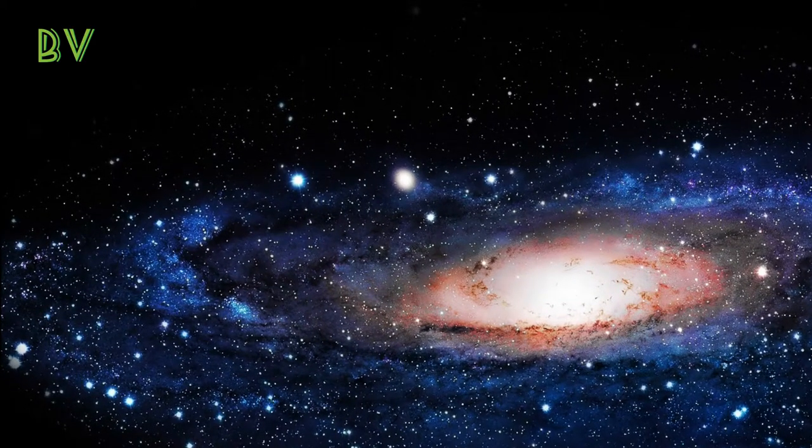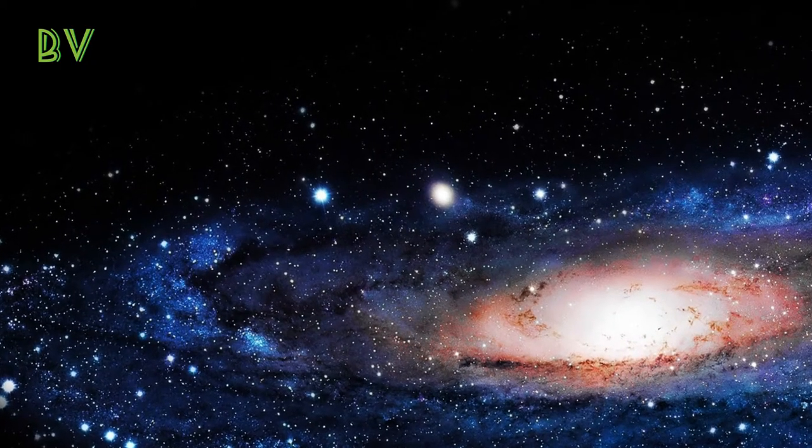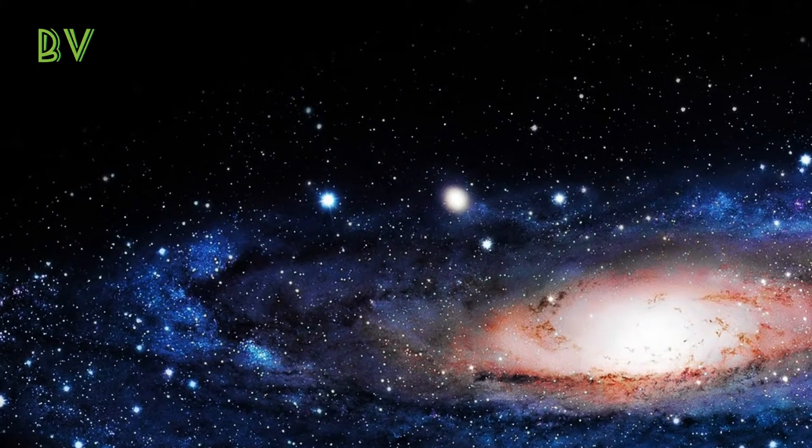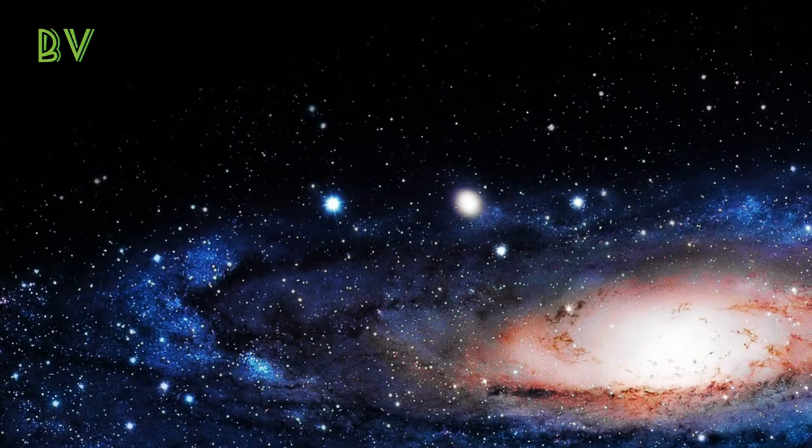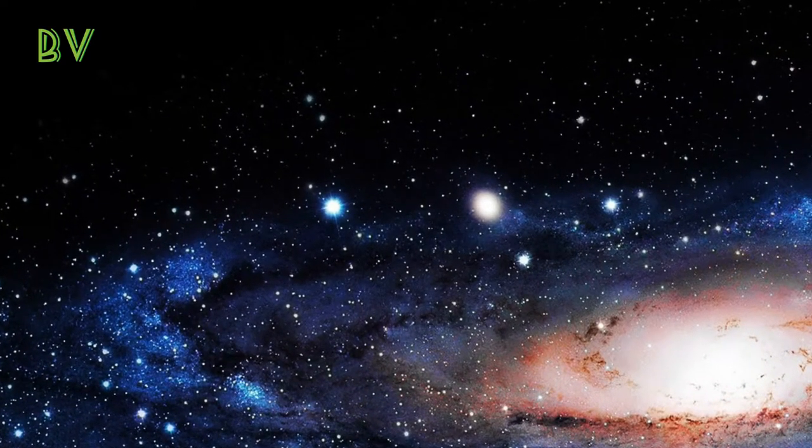Gravitational lensing occurs when the gravity of a massive object, like a galaxy or cluster of galaxies, bends and amplifies the light from an object that lies beyond it, as seen by an observer.